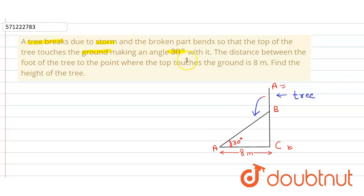Here we have the distance between the foot of the tree to the point where the top touches the ground is 8 meters, and we have to find the height of the tree. The angle of elevation is 30 degrees, and we have to find the height of the tree.